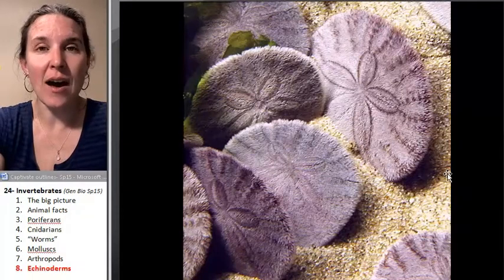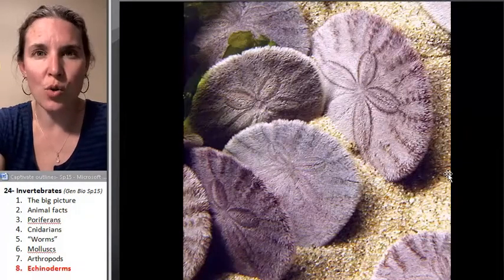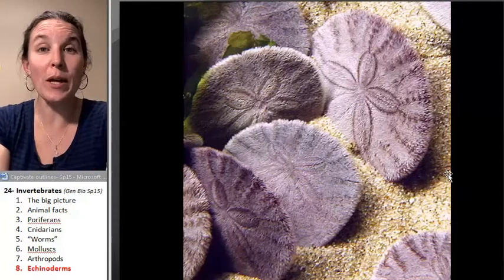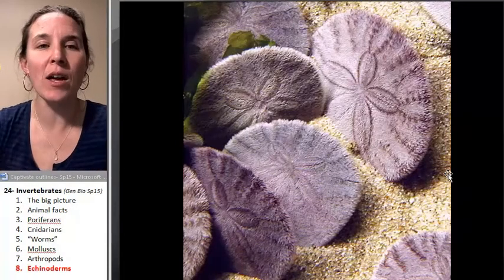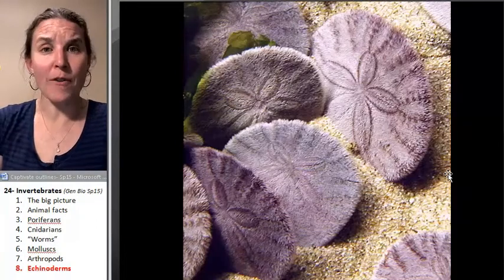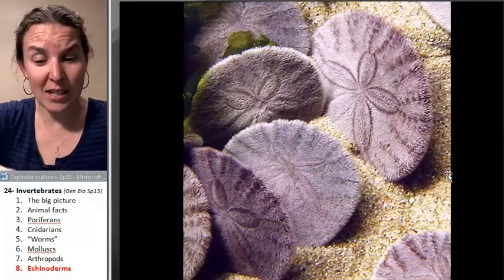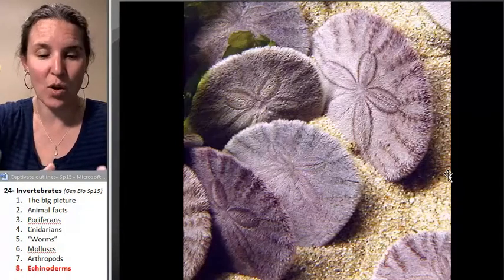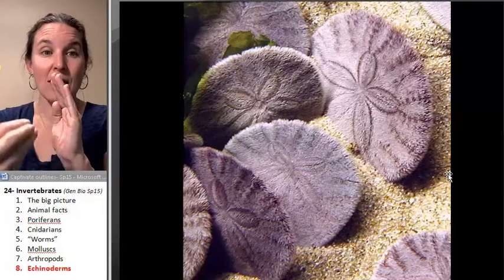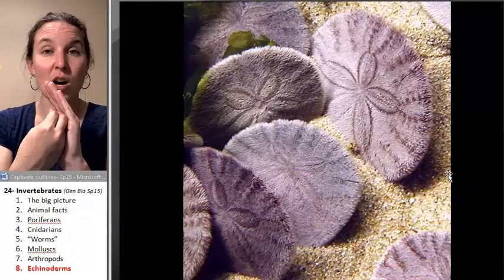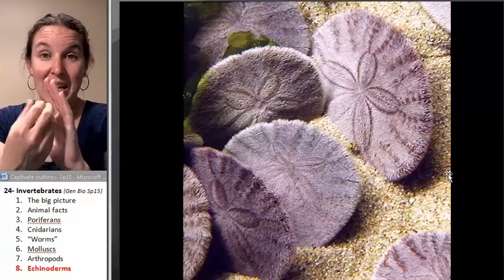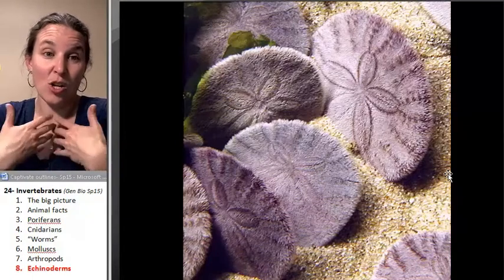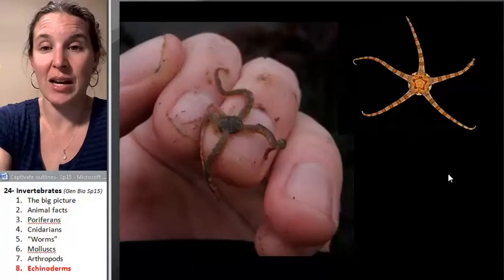Echinoderms, sea stars, have unbelievable strong muscle. They can actually open up some kind of a bivalve. They then barf out their stomachs and stick their stomachs into the thing that they want to digest. So if you imagine opening up a clam, the sea star will actually insert its stomach into the clam shell and digest the clam on the outside and then suck all the digested gut parts back inside.